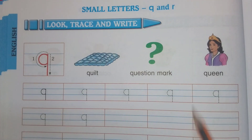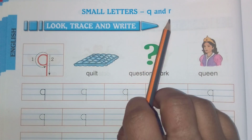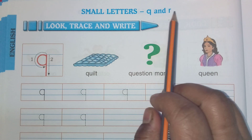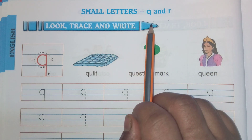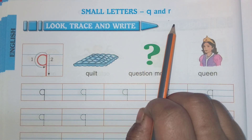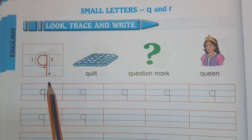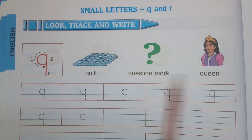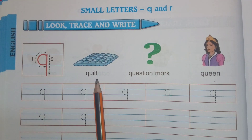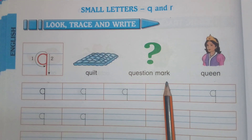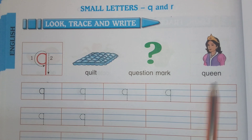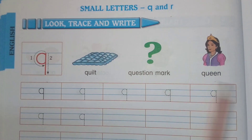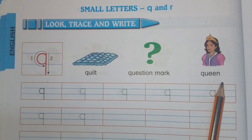Now see children small letter Q and R. What we are going to learn here? Small letter Q and R. See here Q — Q for quilt, question mark, queen. Q for quilt, question mark, queen.